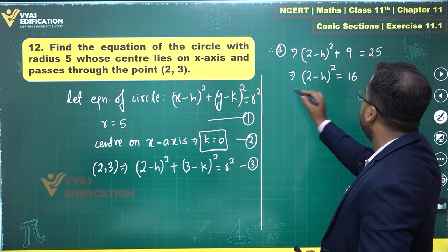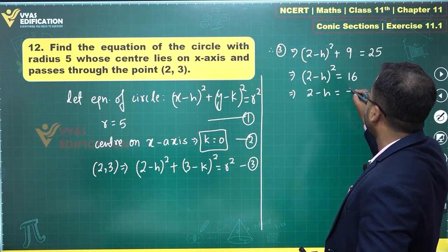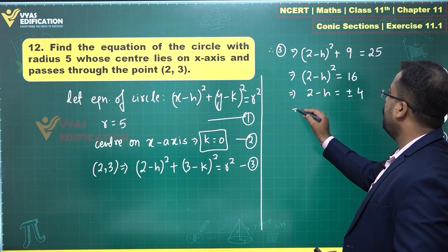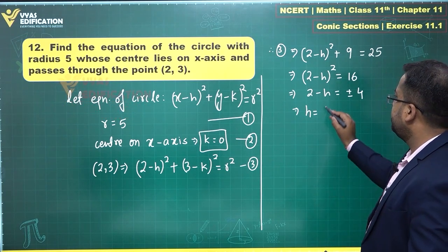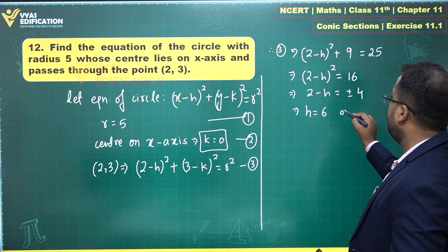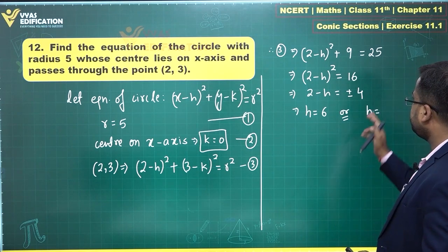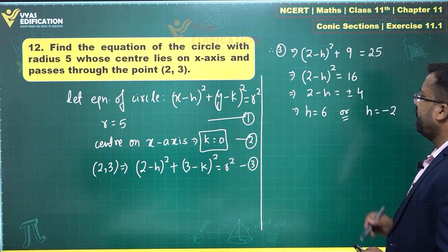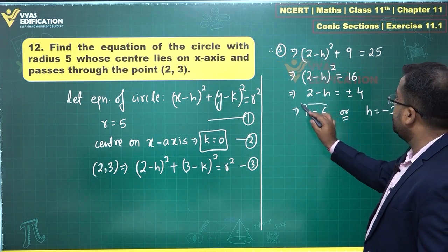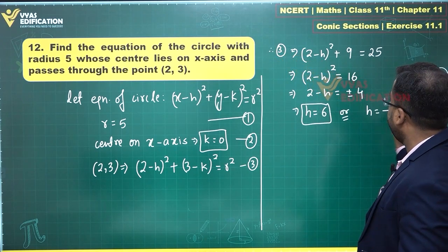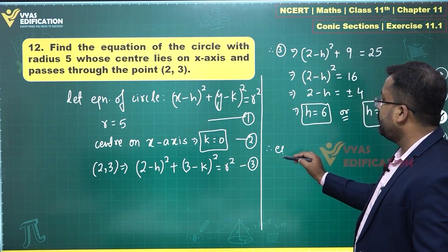This further tells me that 2 minus h squared will be equal to 16, or 2 minus h will be equal to plus or minus 4. So h will be equal to 6 or h will be equal to minus 2.